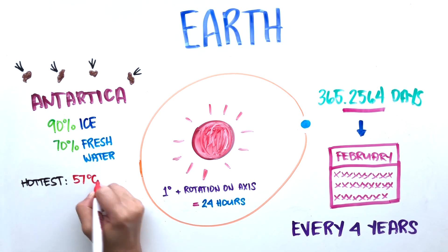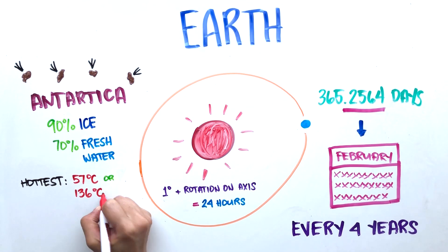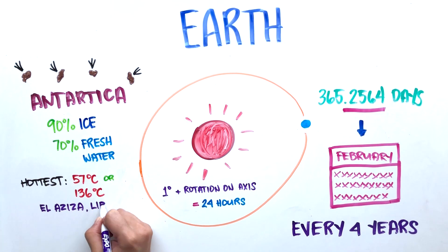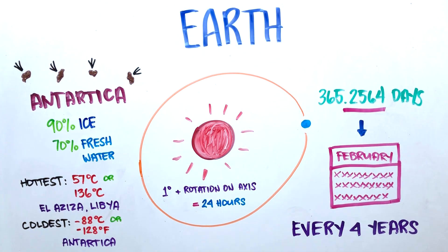The hottest temperature ever recorded was 57 degrees Celsius in Al-Aziza, Libya, and the coldest was negative 88 degrees Celsius in Antarctica.